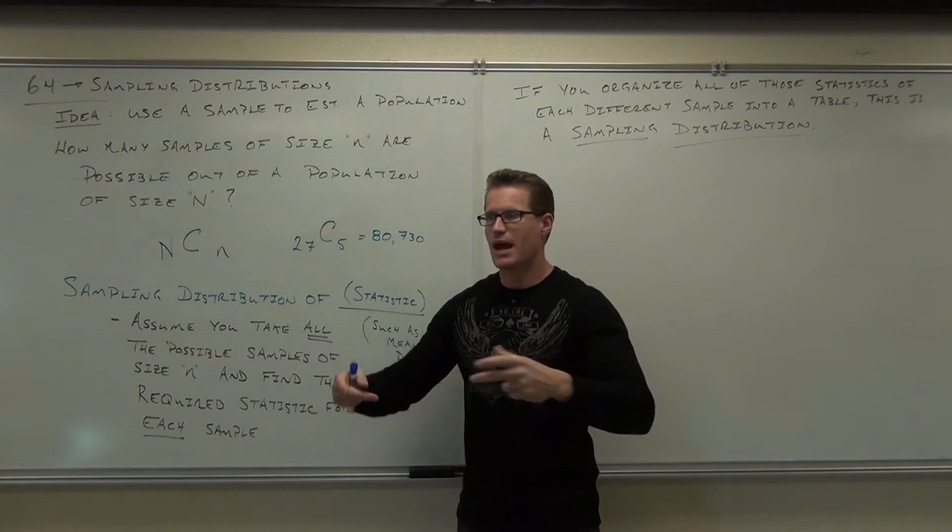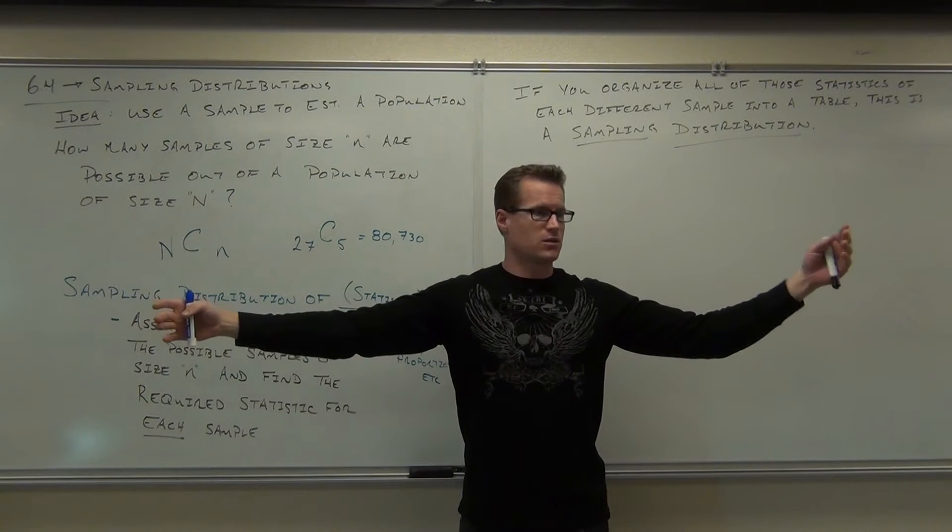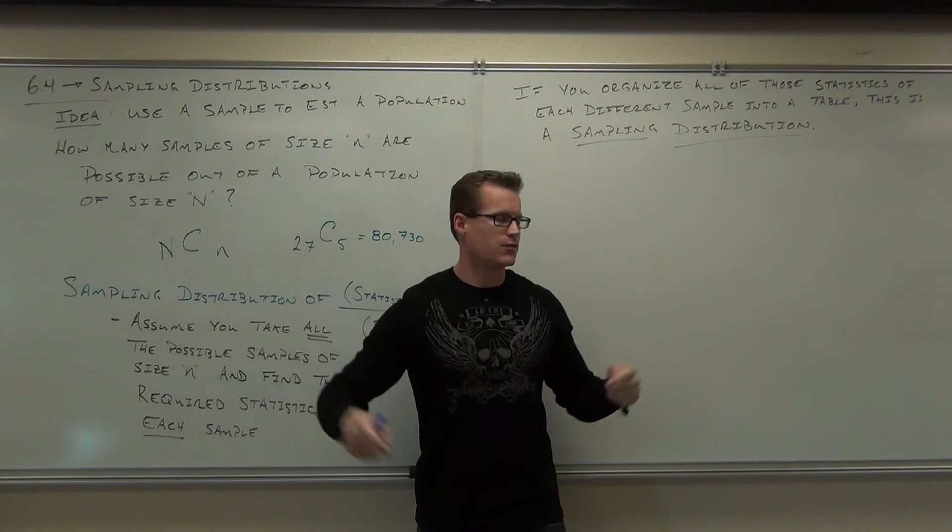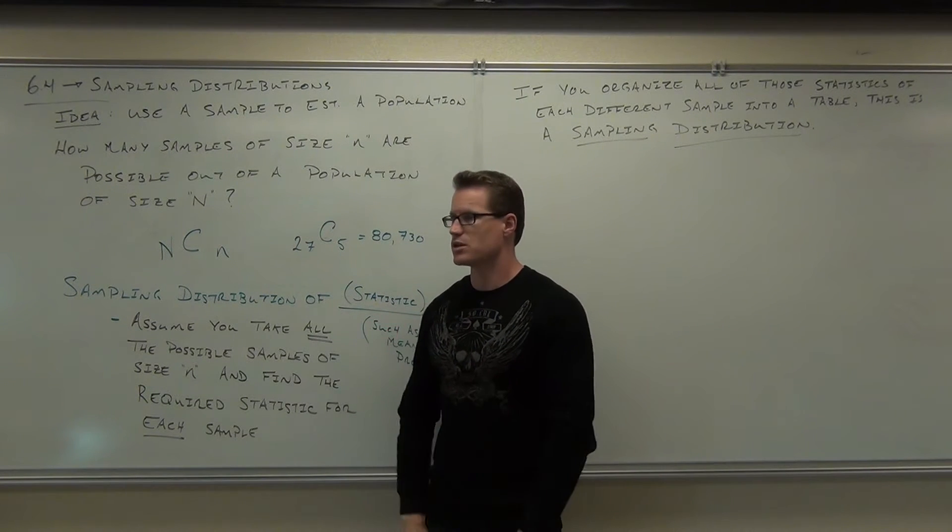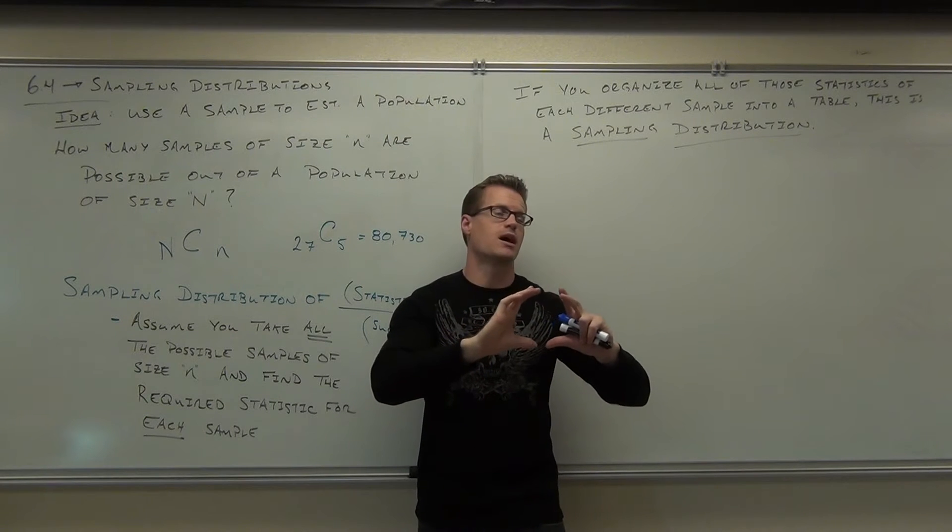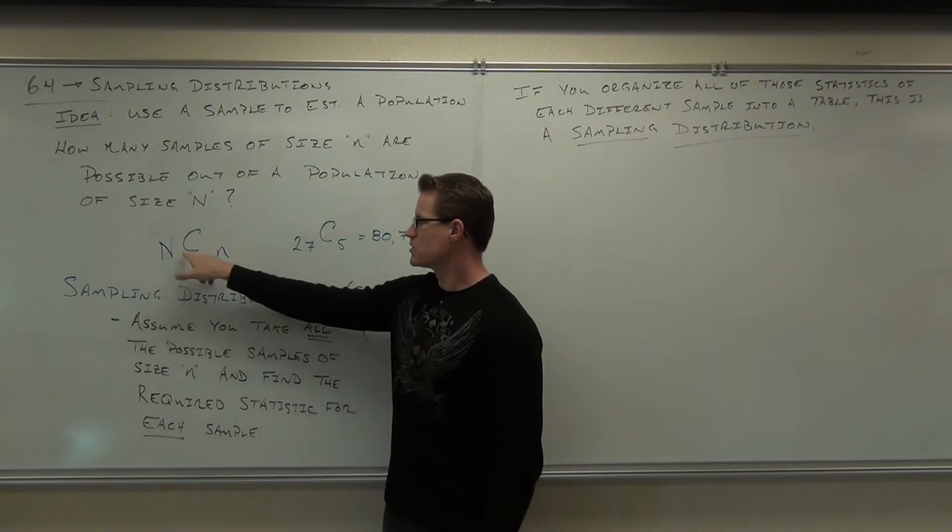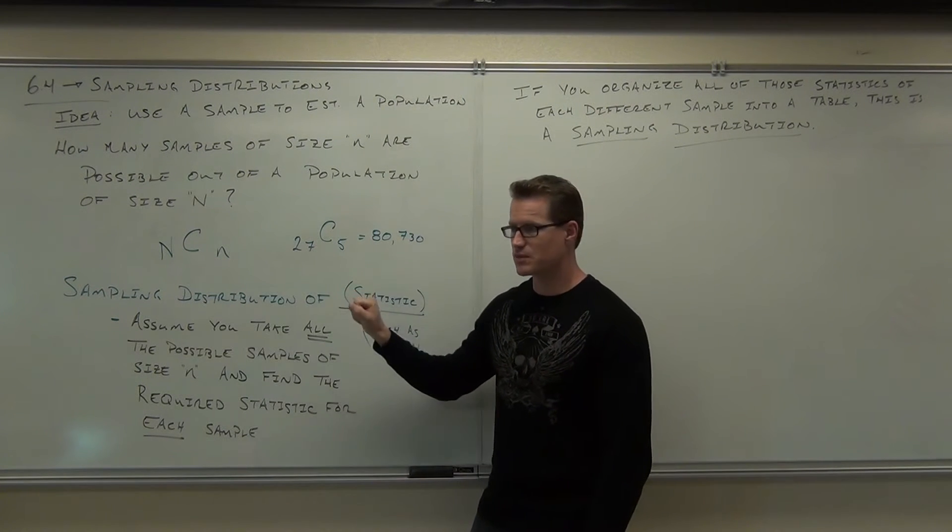So here's the idea. You have this population of size big N. You're taking samples of size little n, say 5. The number of different samples you can get out of that population for a certain size is big N choose little n. That's how many different samples are possible with any situation of a certain size.